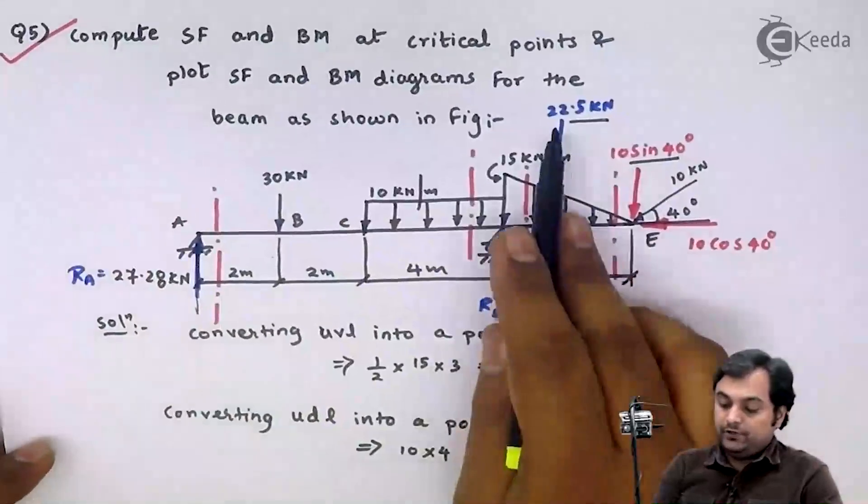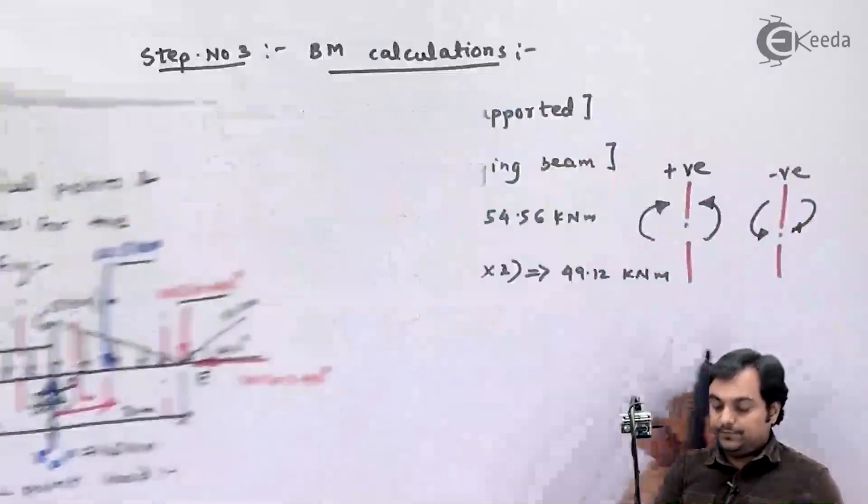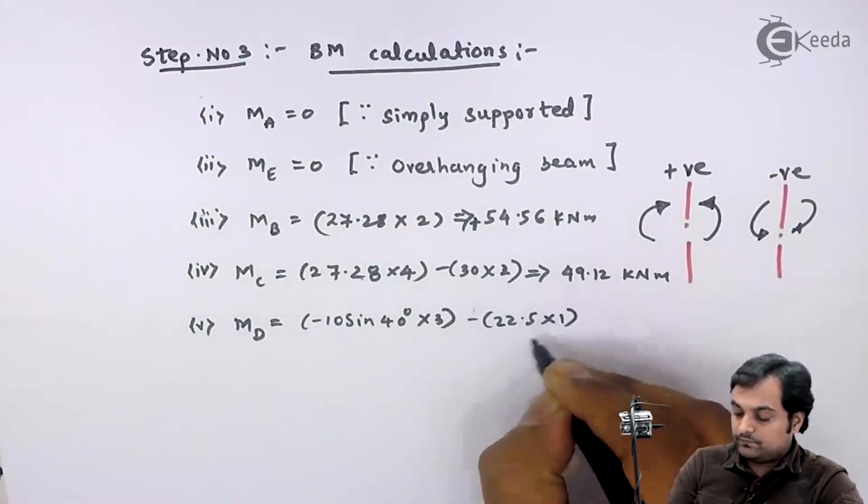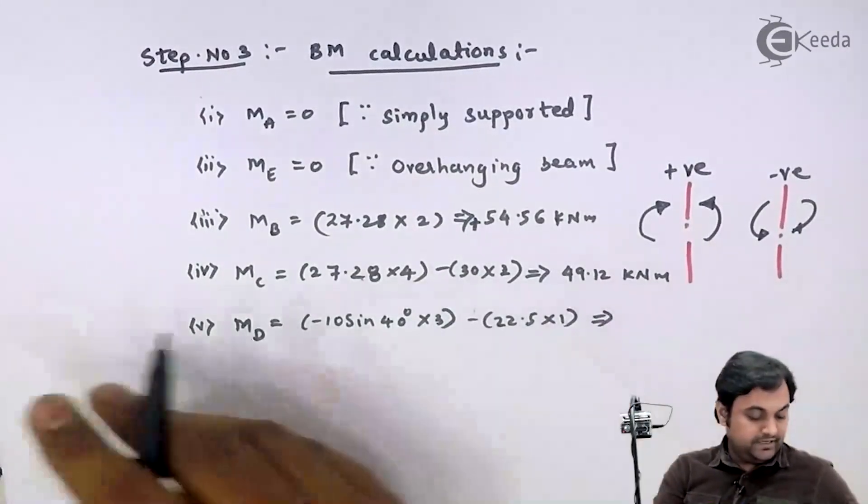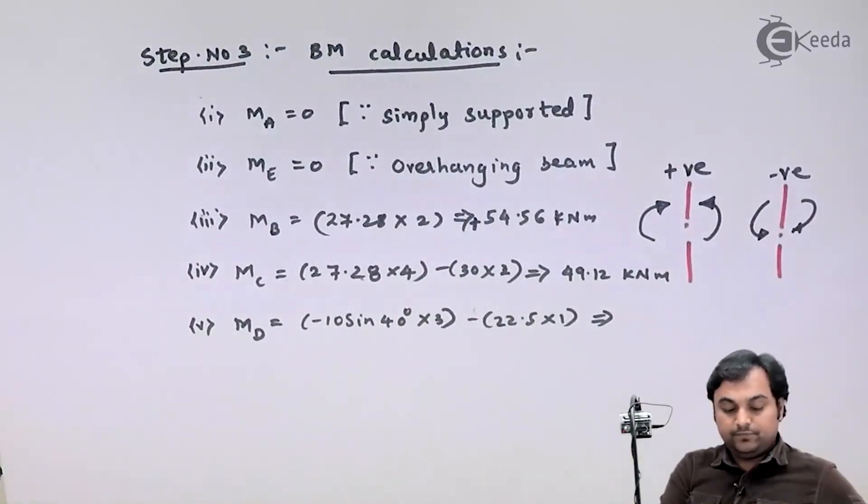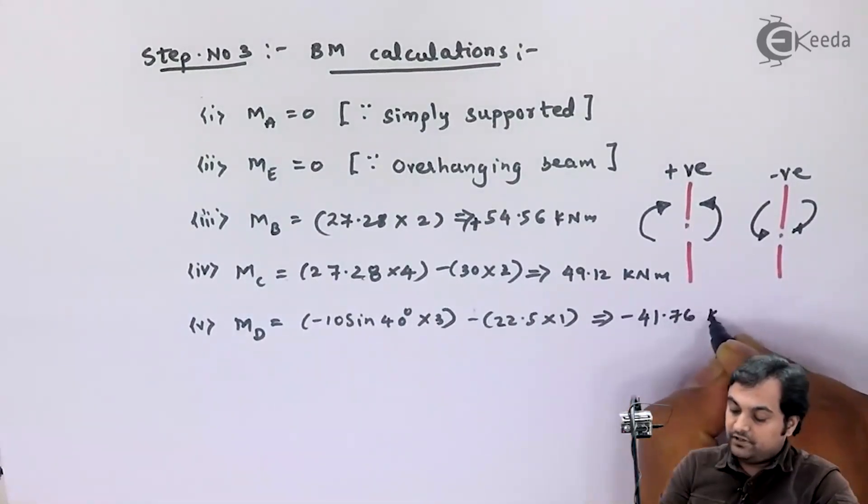Then 22.5, it is downward so negative, minus 22.5 into 1. So moment at D comes out to be minus 41.76 kilonewton meter.